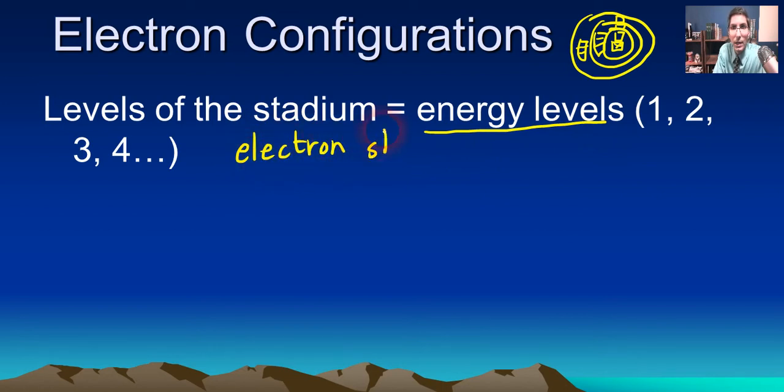Those terms are essentially interchangeable. So energy levels, electron shells, every level of the stadium represents an energy level. So if you had a stadium model in which three of the stadium levels were occupied, we'd say that three of the energy levels, or three of those electron shells, had electrons in them. They were occupied.